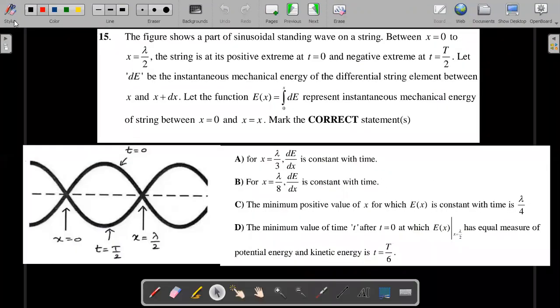It's one or more than one correct type question. The figure shows a part of a sinusoidal standing wave on a string. Between x equals zero and x equals lambda by two, the string is at its positive extreme at t equals zero and negative extreme at t equals t by two.